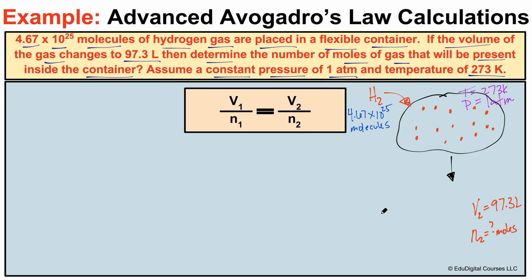What we have to figure out is V1 and N1 so we can plug those values into the formula. The problem is we don't know how many liters this container initially holds and we don't know how many moles of hydrogen gas it initially contains. We have to figure that out using the given value of 4.67 times 10 to the 25th molecules. We can convert the number of molecules of hydrogen gas to moles. Let's go ahead and do that — we'll call this N1.